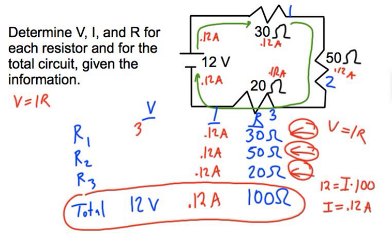I get 3.6 volts for R1. 0.12 times 50 gives 6 volts for R2. Then 0.12 times 20 gives 2.4 volts for R3. There's a couple checks you can do.